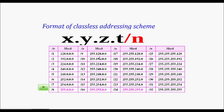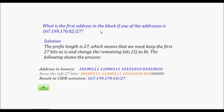The /n notation refers to the network mask. For example, /8 means the network part is 8 bits, so the mask is 255.0.0.0. For /16 the mask is 255.255.0.0. To find the network address, you AND the IP address with the network mask, which gives you the beginning address of the block.